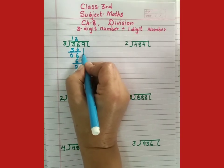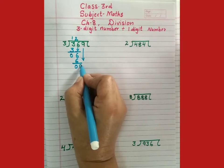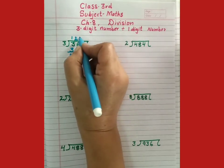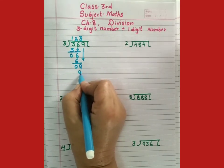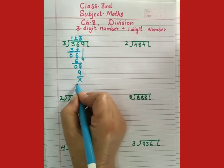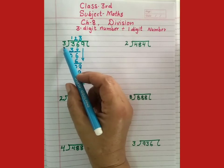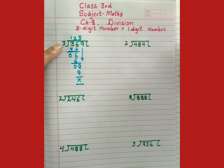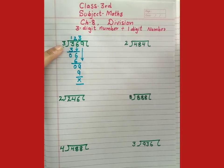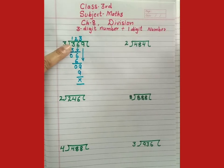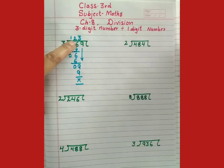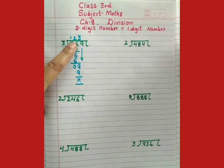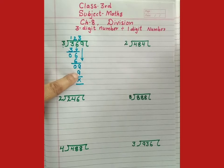Now, we will bring down 9. We will put here cross. Students, 369 divided by 3. Then, quotient is 123. Now, we will bring down 9. 3 threes are 9. So, answer is 123.